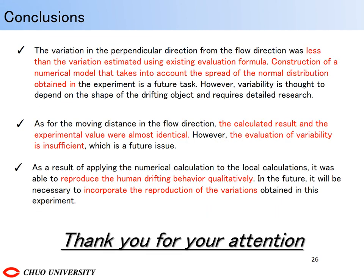This is our conclusion. The variation in the perpendicular direction from the flow direction was less than the variation estimated using the existing evaluation formula, and construction of a numerical model that takes into account the spread of the normal distribution obtained in the experiment is a future task. However, variability is thought to depend on the shape of the drifting object and requires detailed research. As for the moving distance in the flow direction, the calculated result and the experimental value were almost identical. However, the evaluation of variability is insufficient. It was able to reproduce the human-driven behavior qualitatively by local calculation. It will be necessary to incorporate the reproduction of the variation obtained in this experiment. Thank you for your attention.